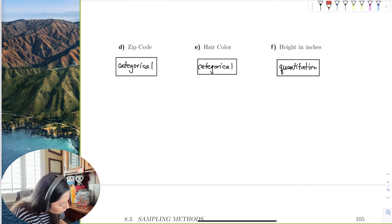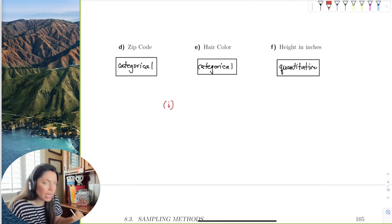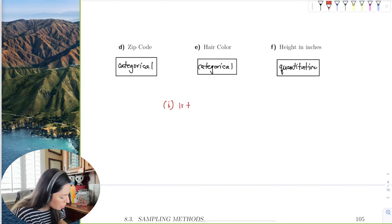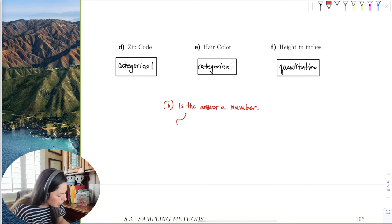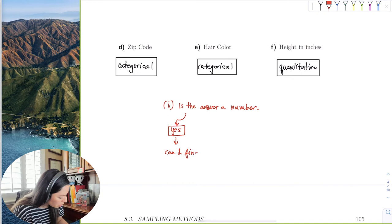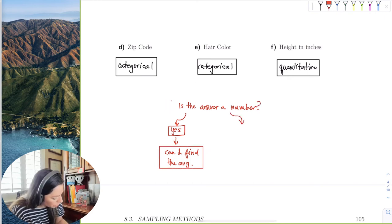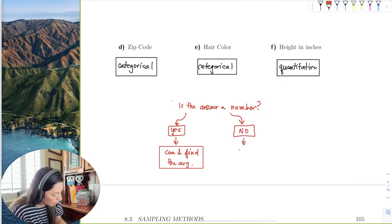So I'm going to just write here, the first question you want to ask if it's categorical or quantitative: is the answer a number? So then you say, well, yes, then say, can I find the average?